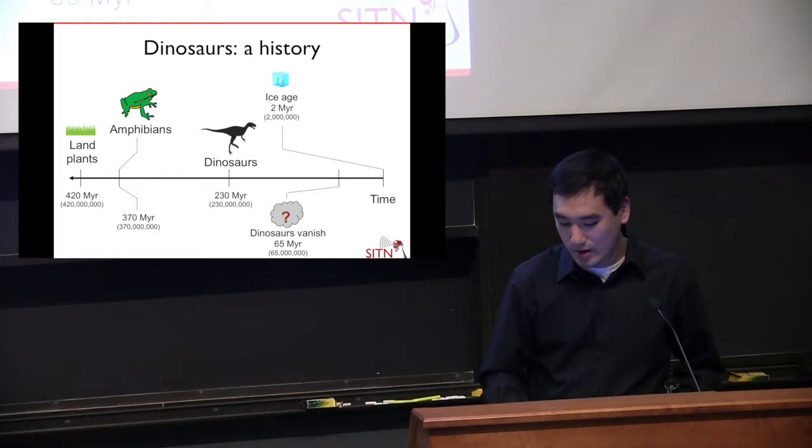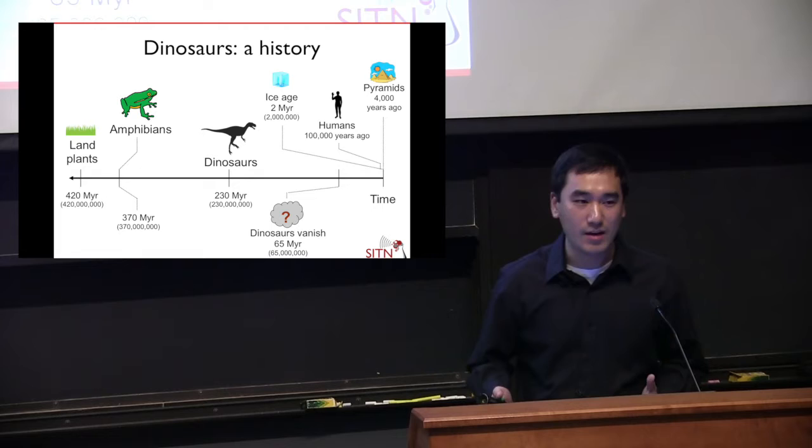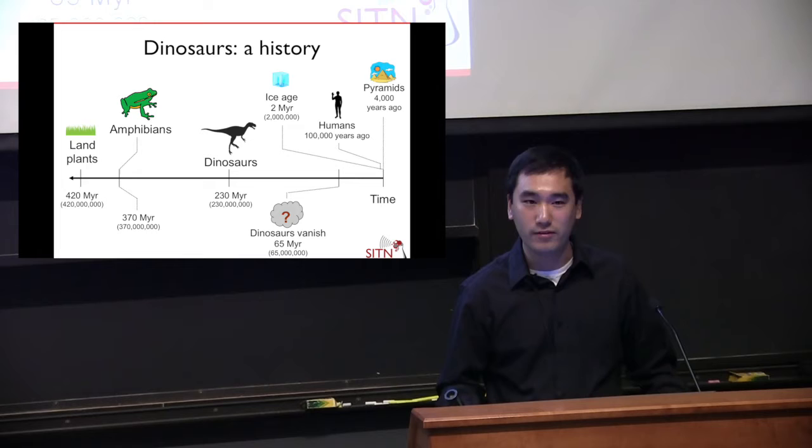And then we have the first modern humans. As humans, we go on and develop civilization and build things like the pyramids. Now, to try to wrap your mind around these sorts of time scales, picture this: we're standing here right now with all of our fancy technology — our smartphones, internet connections, hot water in our houses, that sort of thing.